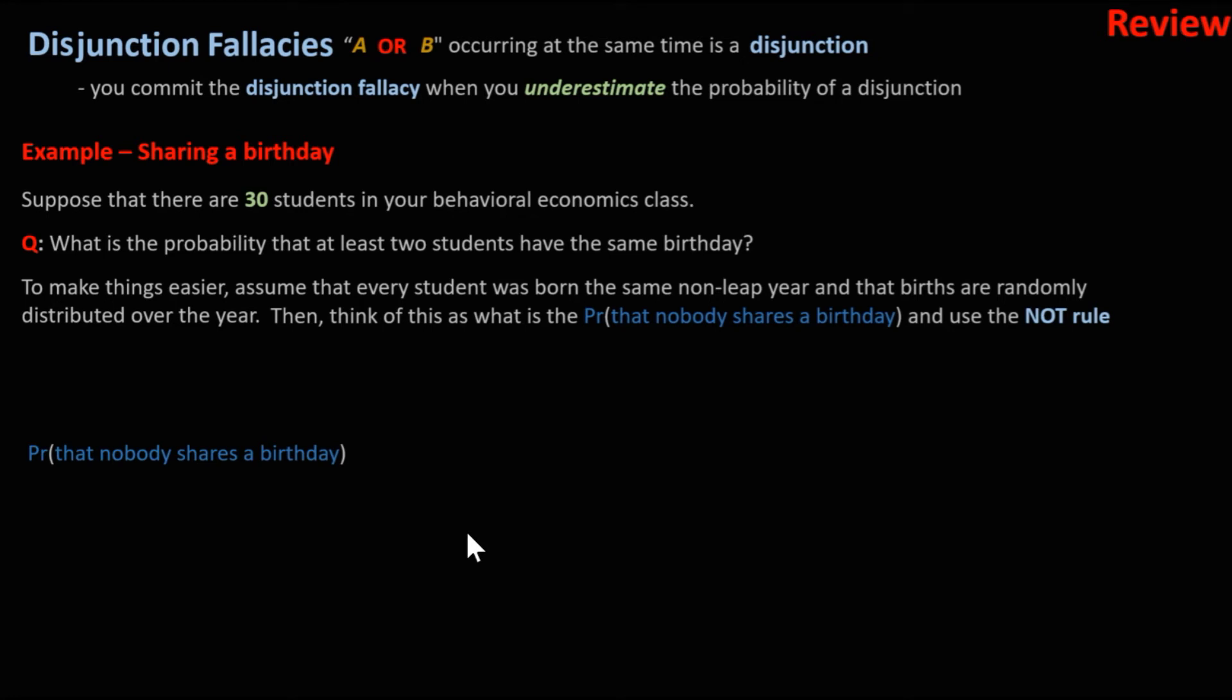The probability that nobody shares a birthday is the probability of the first person having a birthday, so that's 365 of 365 because they could have it on any day, multiplied by the probability that the next person doesn't share that same birthday. So they could be born on 364 days of the 365. Then the third person,